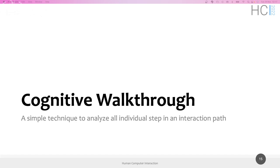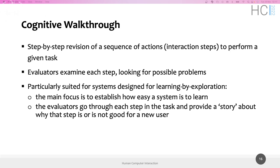We can now start with the first example of a specific strategy: the cognitive walkthrough, which is the first example of an expert review method. We'll see this one today and then heuristic evaluation next time. Cognitive walkthrough is a step-by-step revision of a sequence of actions — interaction steps to perform a given task. Two important things: the task, and the actions to perform the task.